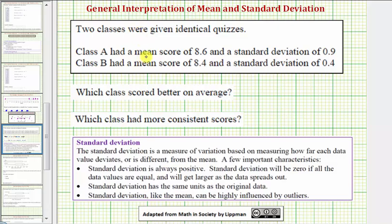Notice how Class A had a mean score of 8.6 and Class B had a mean score of 8.4. Because Class A had a higher mean, we can say that Class A scored better on average.